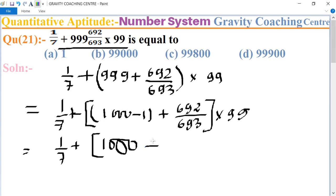Thousand plus 692 upon 693 minus 1, multiply 99. Equal to 1 upon 7 plus.